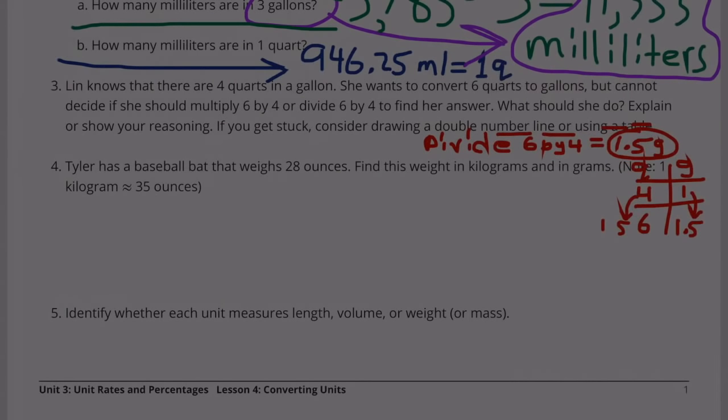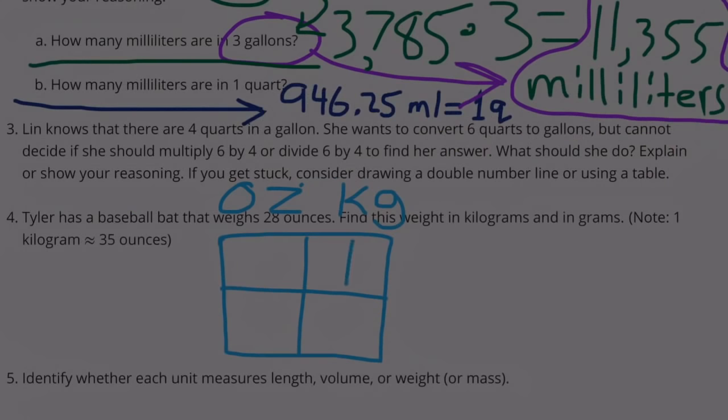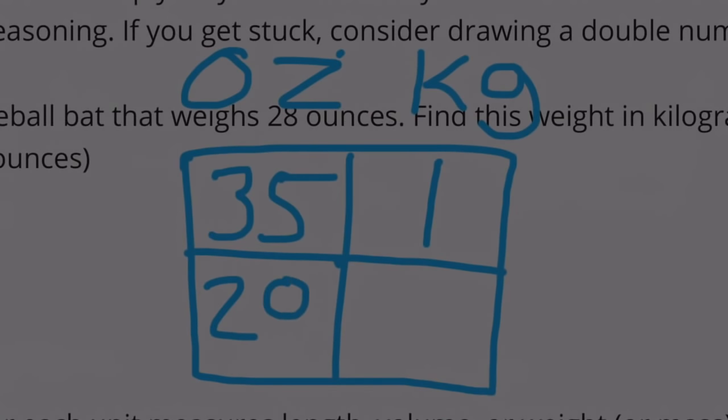Number 4: Tyler has a baseball bat that weighs 28 ounces. Find this weight in kilograms and in grams. Kilograms are just about 35 ounces. Tyler's baseball bat weighs 28 ounces and 28 ounces is less than 35 ounces. So I think the weight in kilograms is actually going to be less than 1 kilogram. 1 kilogram is about 35 ounces.